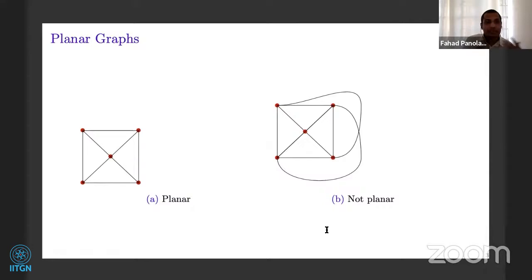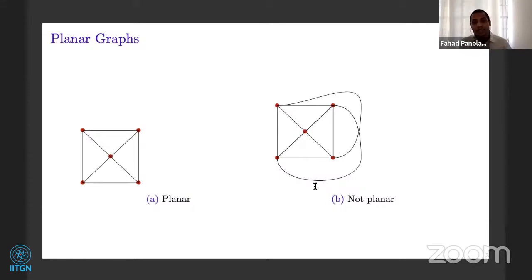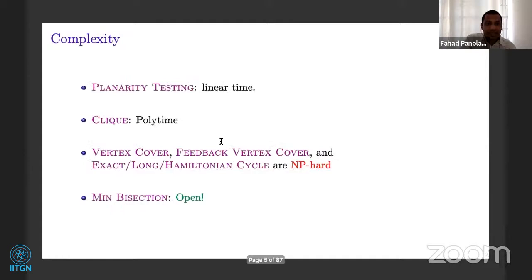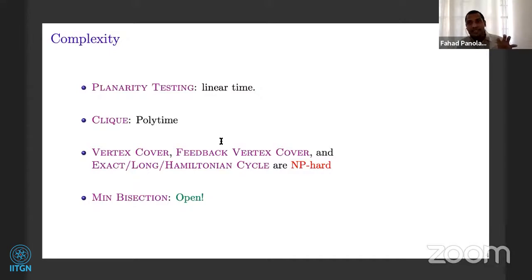For example, the left-hand side graph is a planar graph. On the right-hand side, no matter whichever possible way you draw this graph — which is a complete graph on five vertices — you will not be able to draw it in a plane without crossing at least a pair of edges. Notice that this actually means that in a planar graph, you cannot have a large clique — a clique of size five or more. That actually tells us the clique problem can be solved very easily on planar graphs. The maximum size of a clique is four, and you just need to try all possible sets of four vertices.